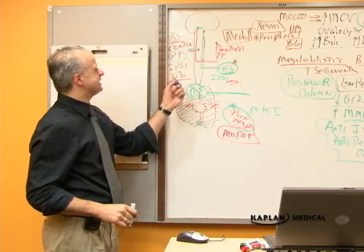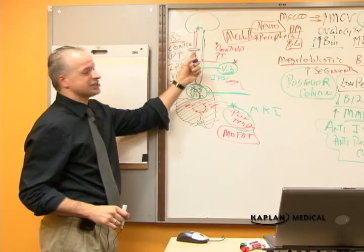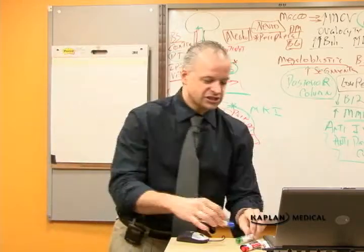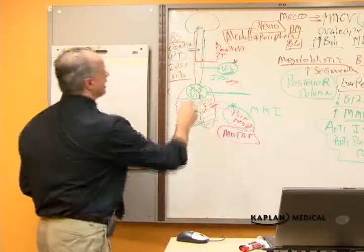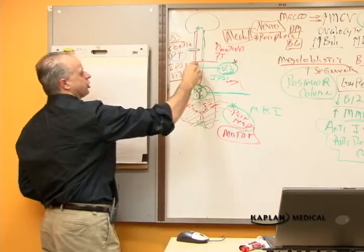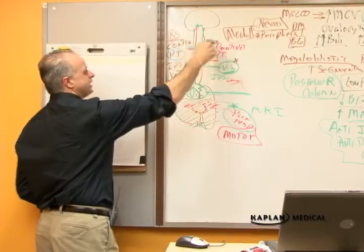But I lose the position and vibratory from the ipsilateral side. So let's look at the pain and temperature. It's from the contralateral side, goes over. If I get cut on my right, I don't feel my left.